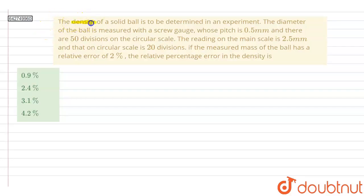The density of a solid ball is to be determined in an experiment. The diameter of the ball is measured with a screw gauge whose pitch is 0.5 mm and there are 50 divisions on the circular scale. The reading on the main scale is 2.5 mm and that on circular scale is 20 divisions.